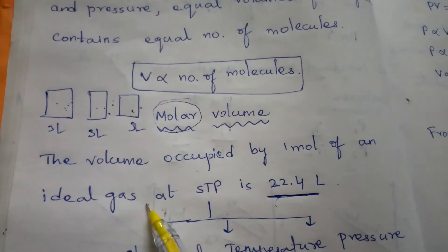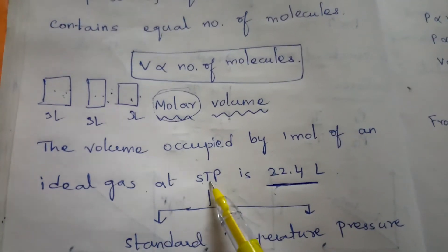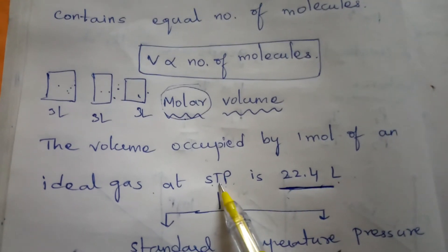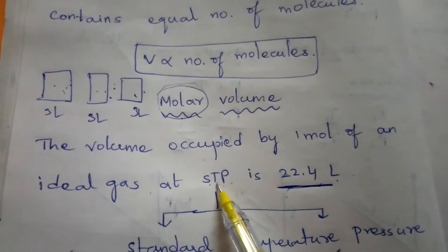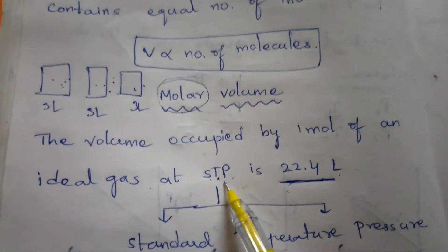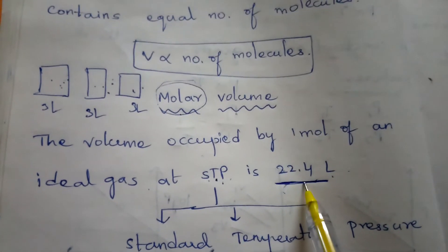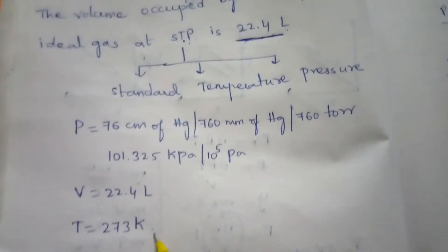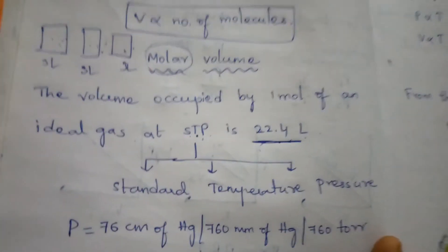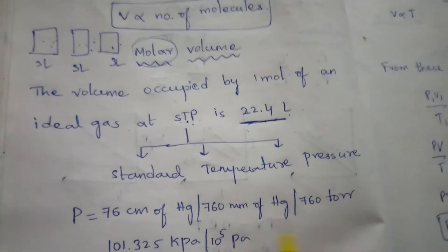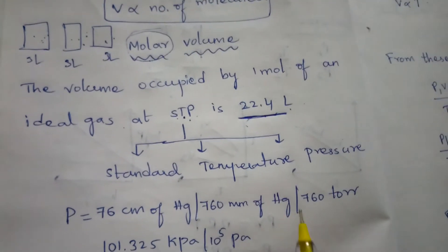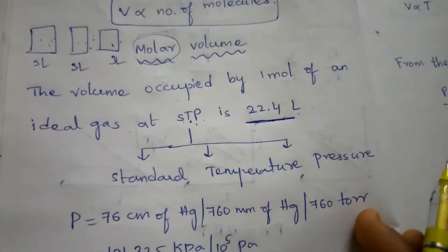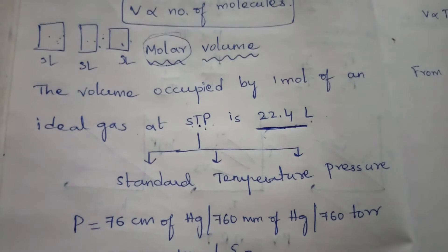At standard temperature and pressure (STP), one mole of an ideal gas occupies 22.4 liters. Standard temperature is 273 K and pressure is 1 atmosphere. So the molar volume = 22.4 liters.